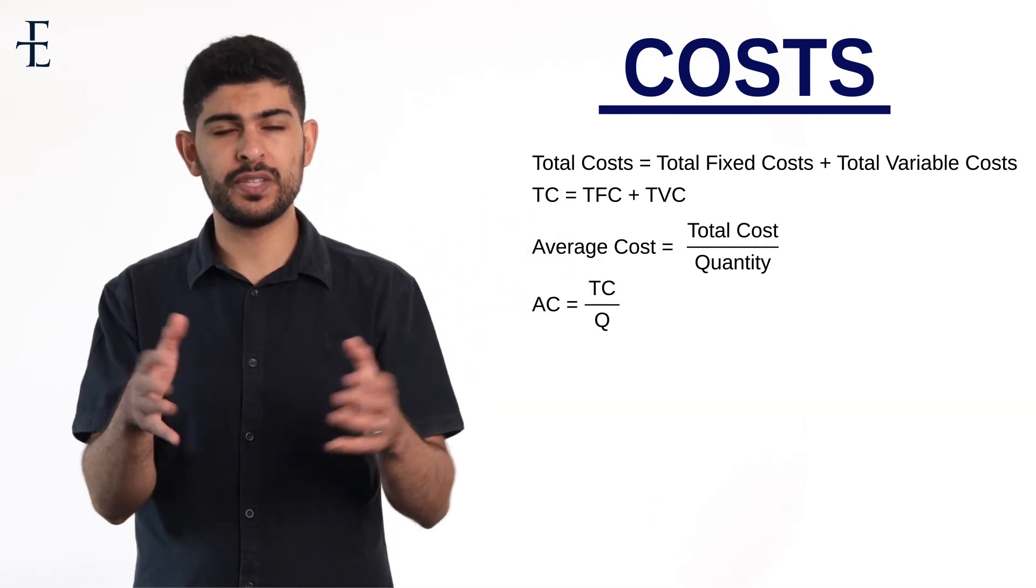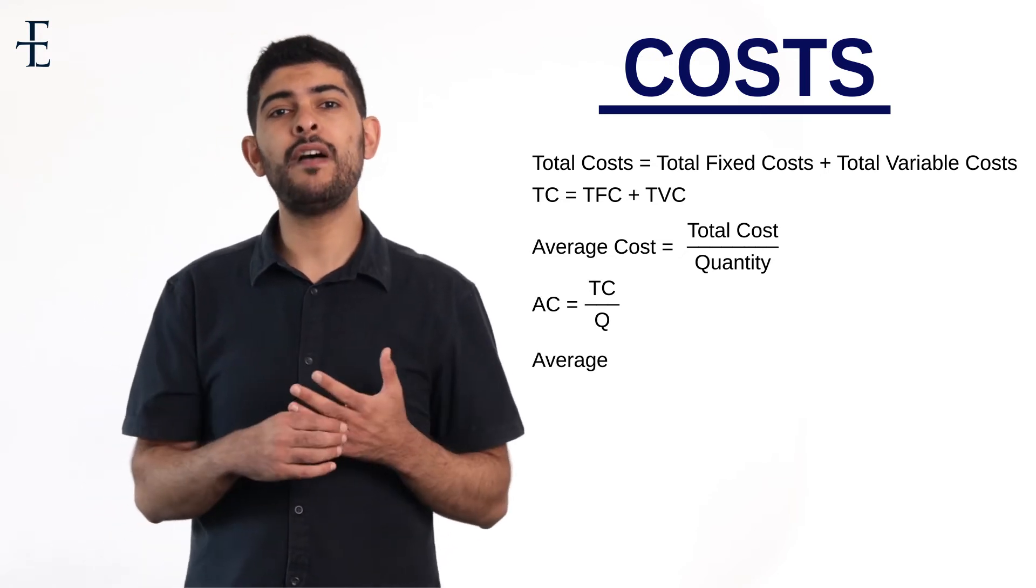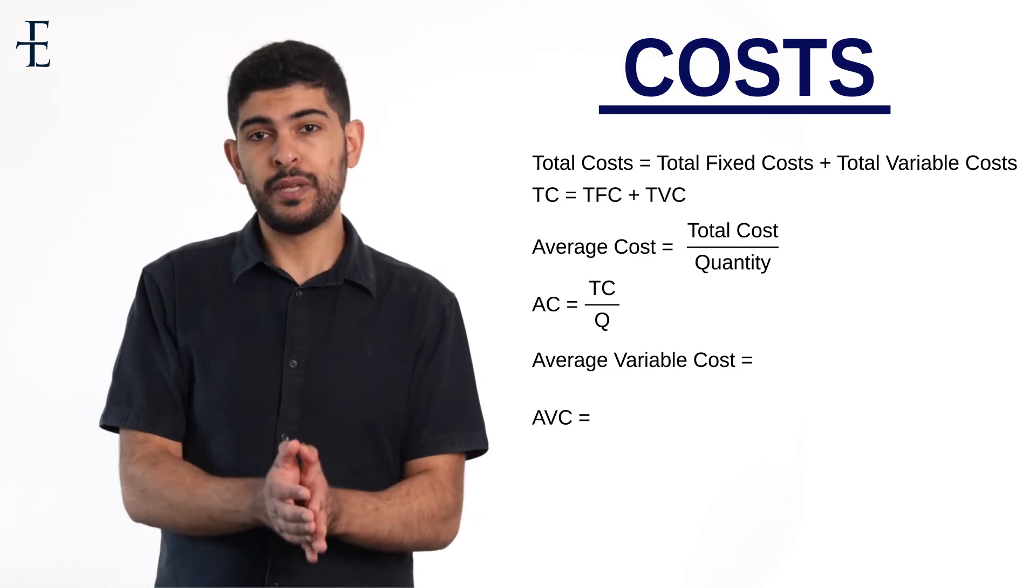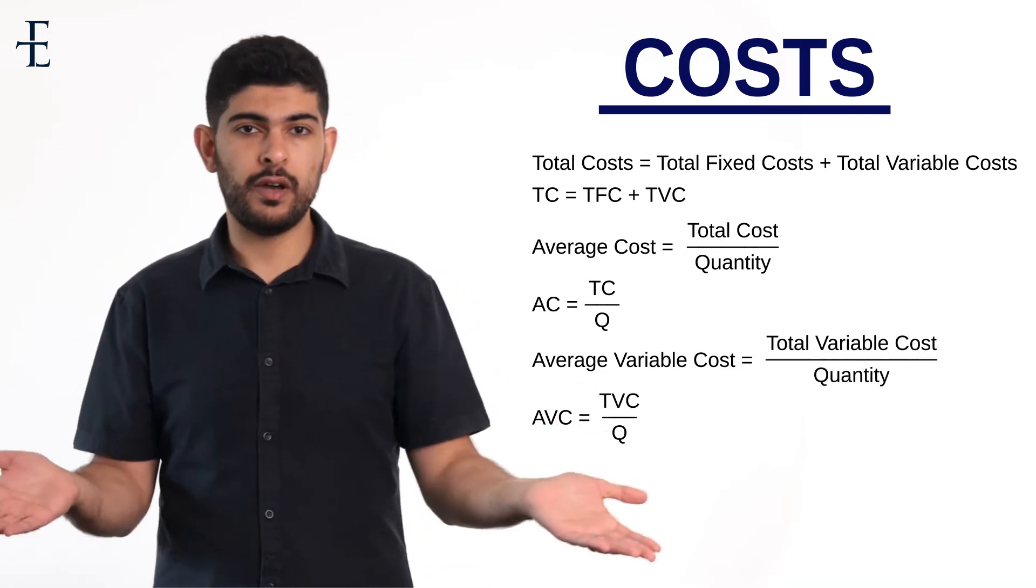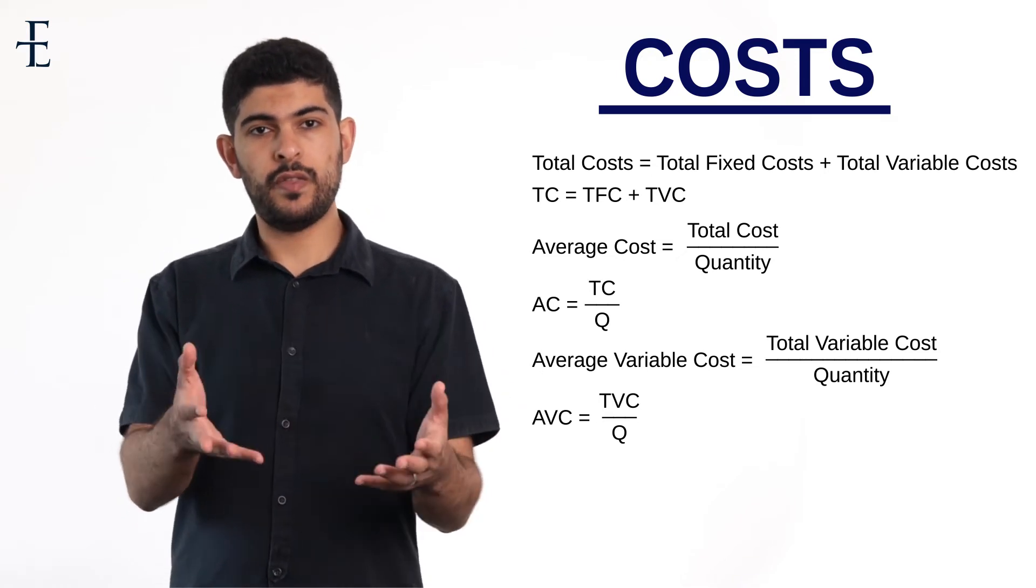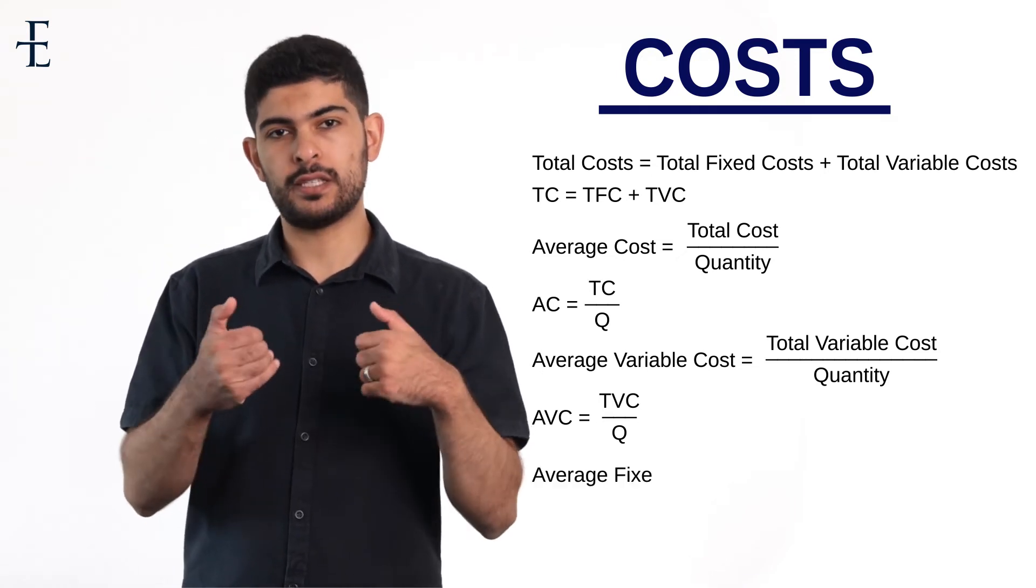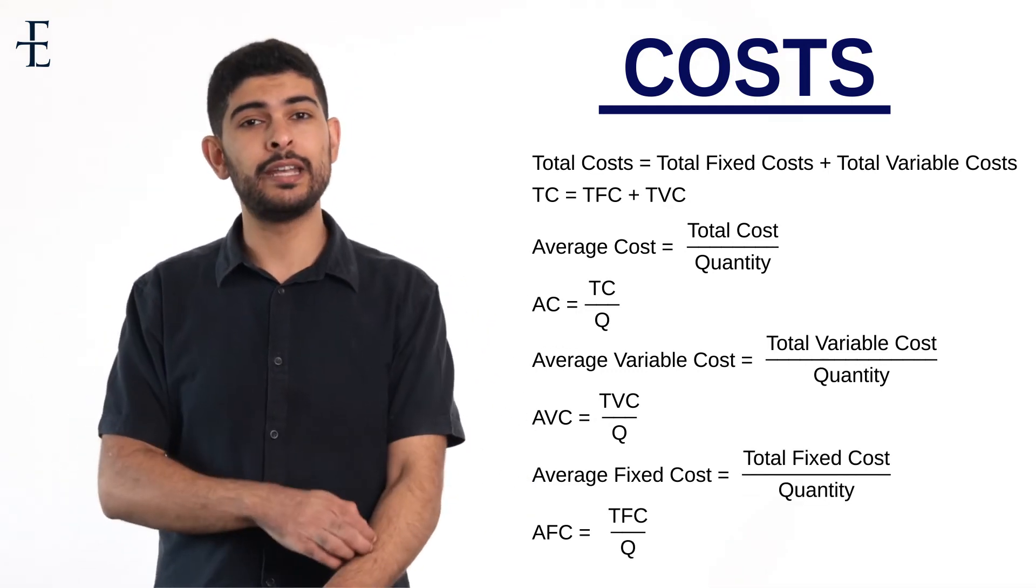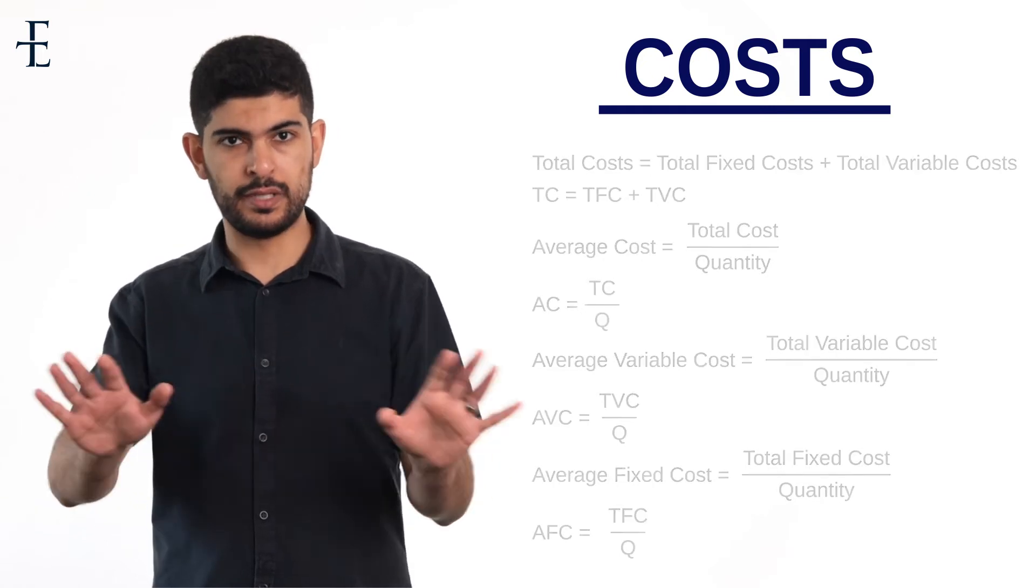The second definition or formula is average variable cost. How would I calculate that? Average variable cost is simply total variable cost divided by, again, output, Q. The final formula, have a go at this one, is average fixed cost. What do I do in that context? Well, I simply do total fixed cost and divide it by the quantity. Simple as that.